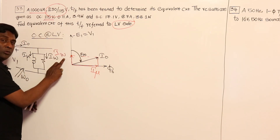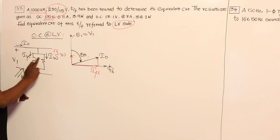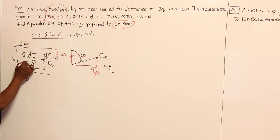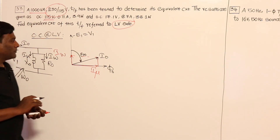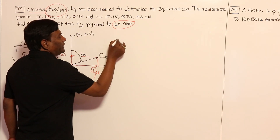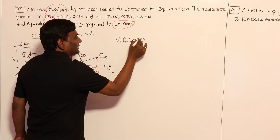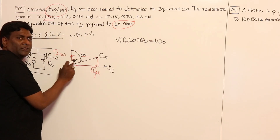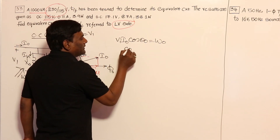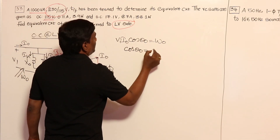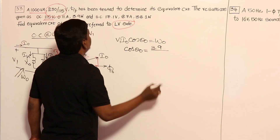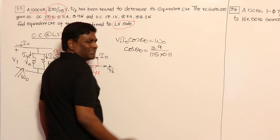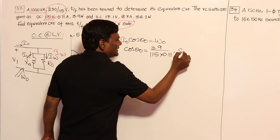The component of I0 in phase with the flux is Imu, and the component in line with V1 is Iw. We need to find Imu and Iw such that R0 = V1 / Iw and X0 = V1 / Imu. Now, V1 × I0 × cos(θ₀) equals the wattmeter reading W0, so cos(θ₀) = W0 / (V1 × I0) = 3.9 / (115 × 0.11). From that we can calculate sin(θ₀).